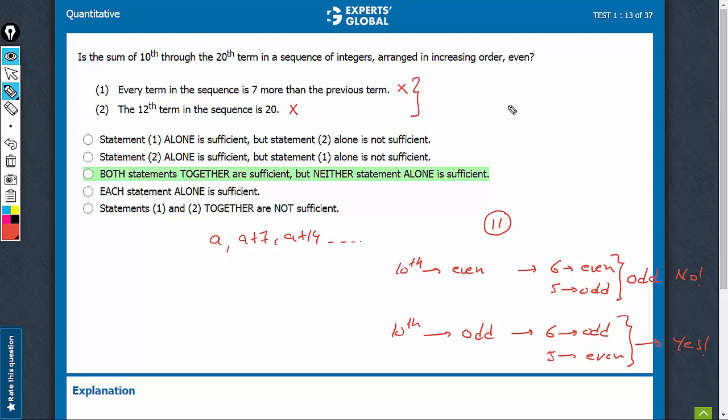On combining, we know that 10th, 11th, 12th - it says that the 12th term is 20, which is even. Then 11th term should be odd because 7 has been subtracted, and therefore 10th term should be even. That means this is the case and therefore this case can be eliminated. We have a unique case and the value is odd.